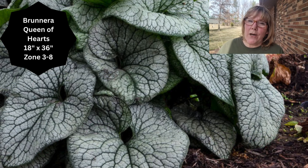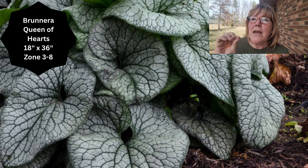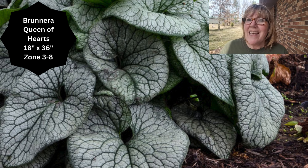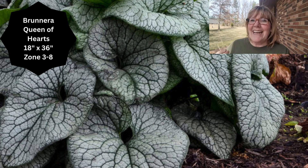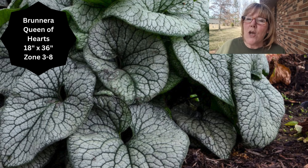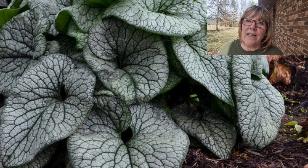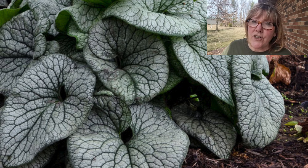The next layer down will be Brunnera Queen of Hearts by Proven Winners. It gets nice big heart-shaped leaves with a silver overlay and a thin narrow green edging. It produces blue forget-me-not flowers in the spring — though you're really growing it for the foliage. These grow 18 inches high by 36 inches wide, in zones 3 through 8, and are very reliable. I don't cut mine back in fall — just pull off tattered foliage in spring.